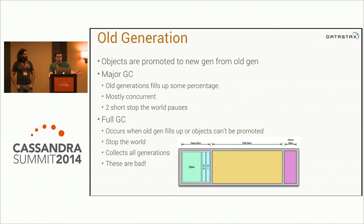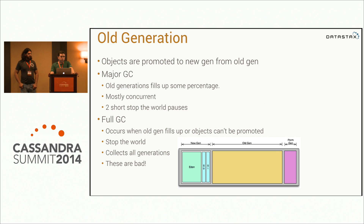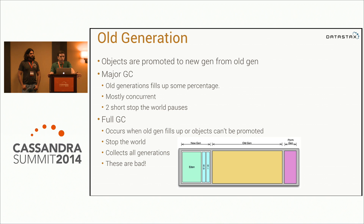Once your object is promoted into the old generation, a different set of garbage collection algorithms runs on it. Once the old generation fills up to a certain percentage — with Cassandra that's about 75% — it triggers a major garbage collection. Unlike the new generation, this is mostly concurrent, with two small pauses while it marks some objects, but for the most part the GC runs while your application is running. The exception is a full garbage collection: if the old generation actually fills up or you can't promote objects into it, it will stop the application and garbage collect the entire heap — new gen, old gen, perm gen — and also do some defragmentation. This is a stop-the-world collection that typically takes multiple seconds, so it's bad and you want to avoid it.